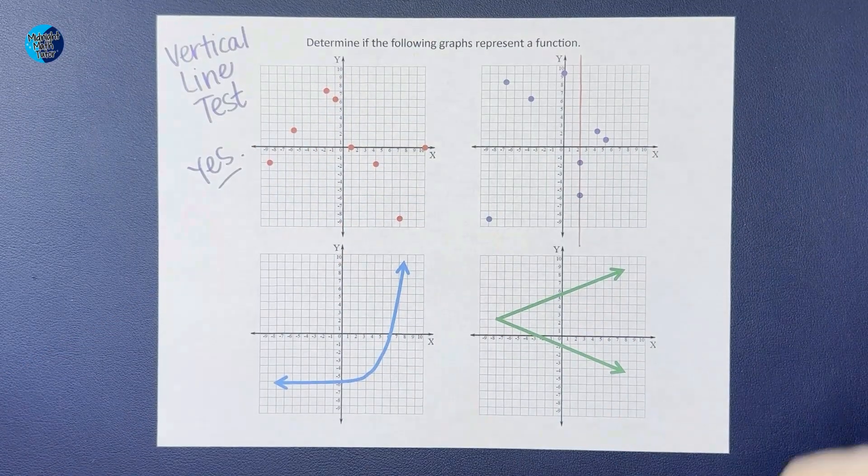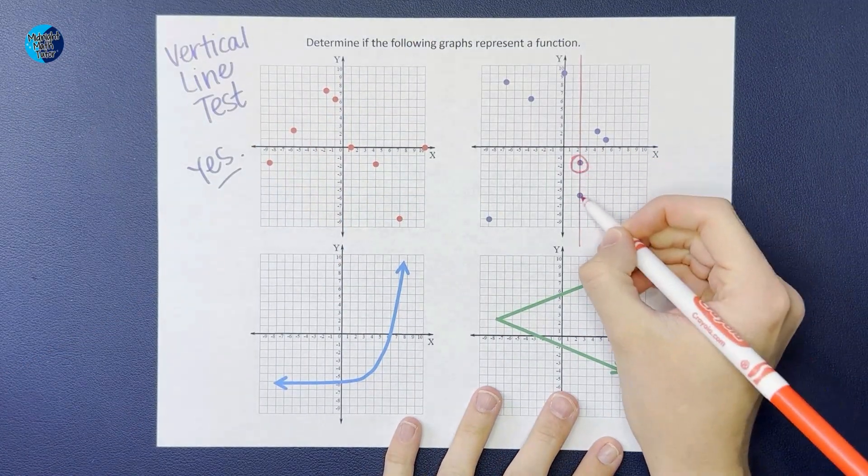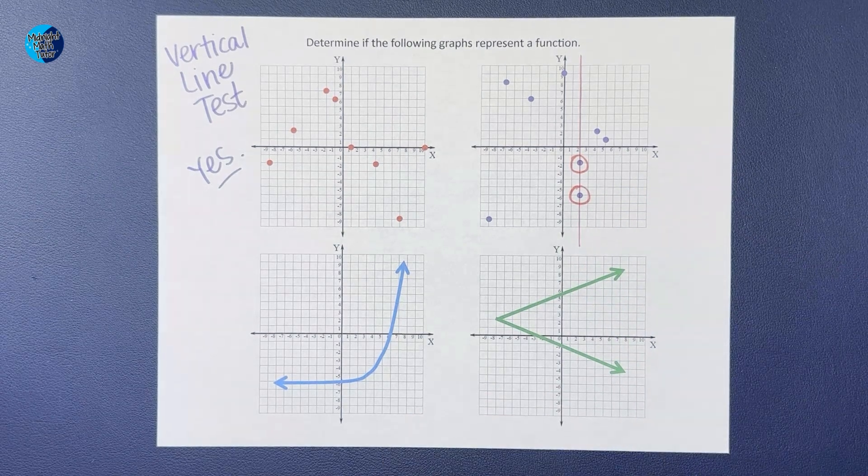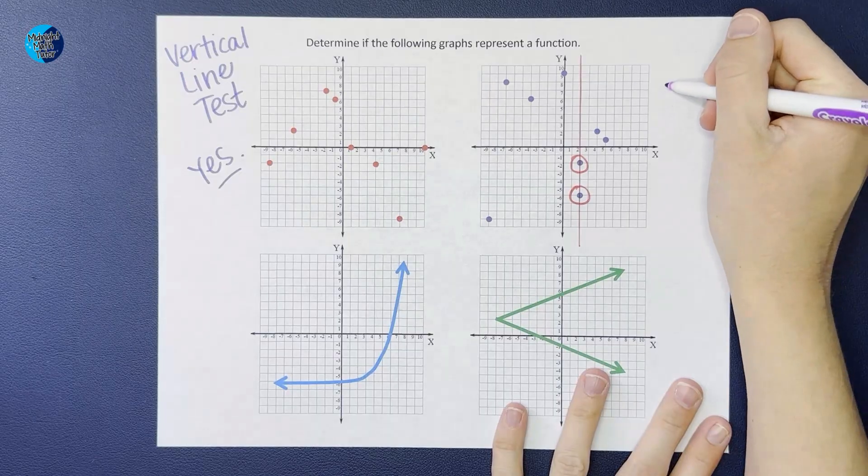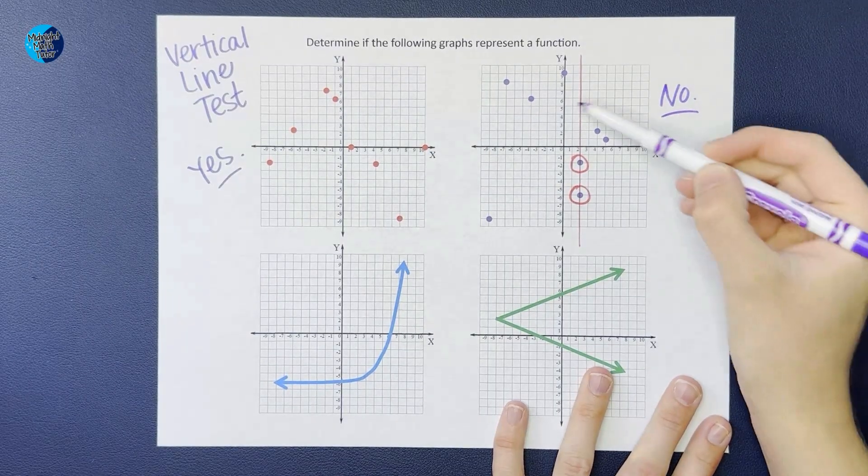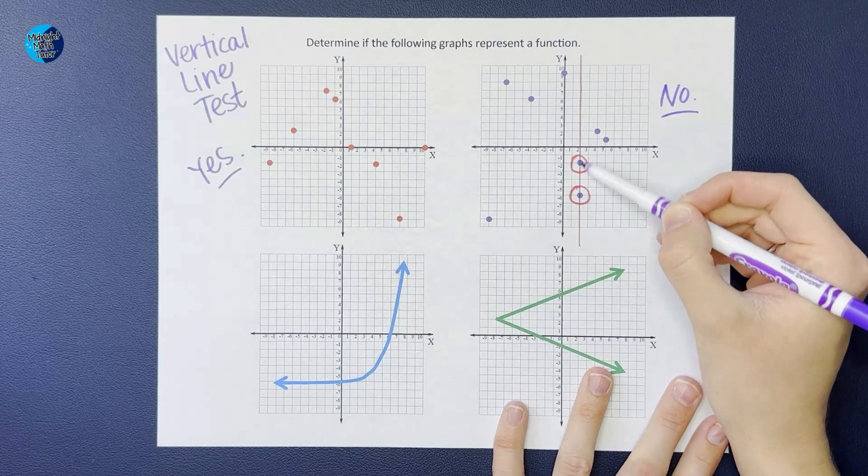That vertical line - you don't have to, it just can help you visually see. Oh look, that vertical line crosses two points, which means no, this is not a function.